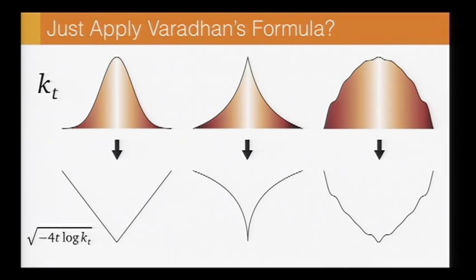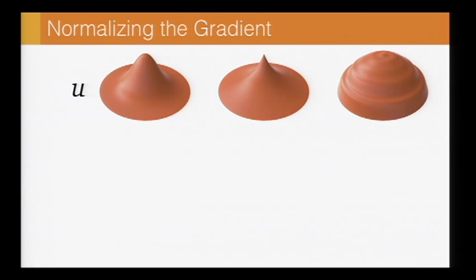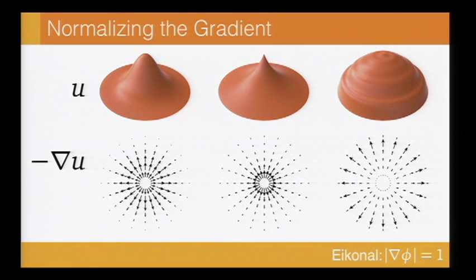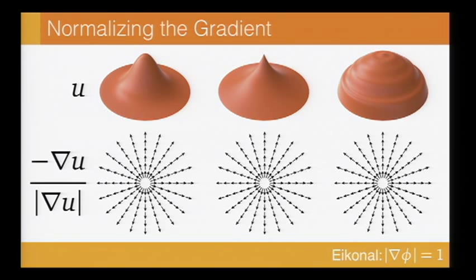And so this is really the basic observation behind the heat method, is that we can just take any radially symmetric function that decays monotonically with distance, and take its gradient, and we'll get a gradient field that at least points in the right direction, even if it has the wrong magnitude. Of course, we know from the eikonal equation exactly what the magnitude should be. It should be one everywhere. And so we can just normalize this gradient field to get the gradient of distance.